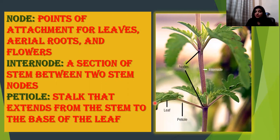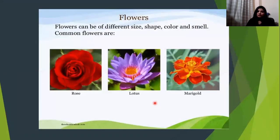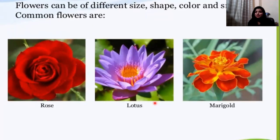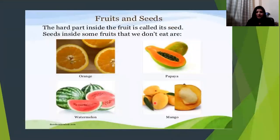Another part of the plant is the flower — a very beautiful and attractive part. Flowers look beautiful and are used for various purposes. Some common flowers include rose and marigold. Apart from attracting bees and other insects, flowers are used by humans in making cosmetics, perfumes, and garlands.